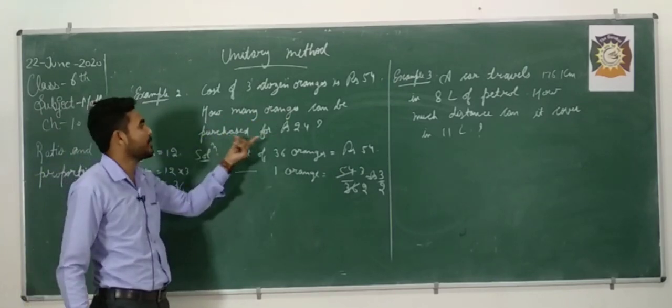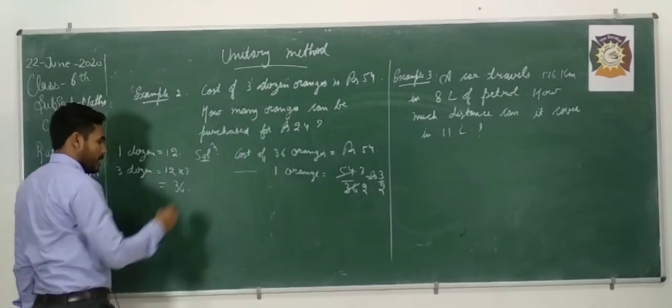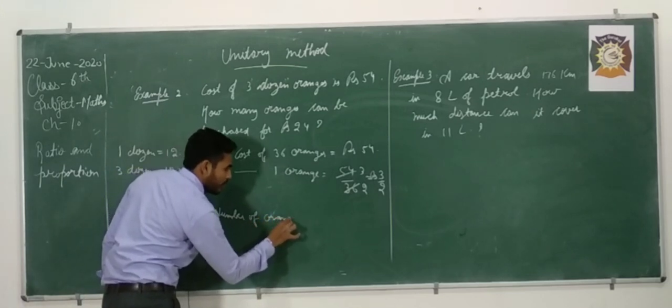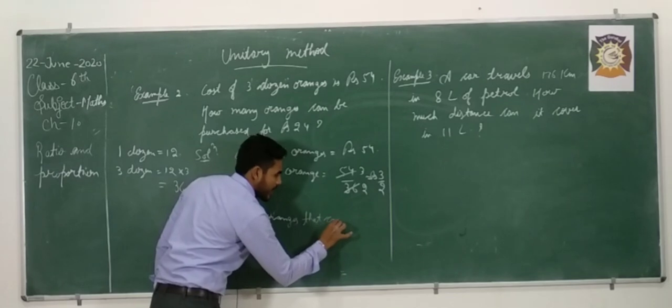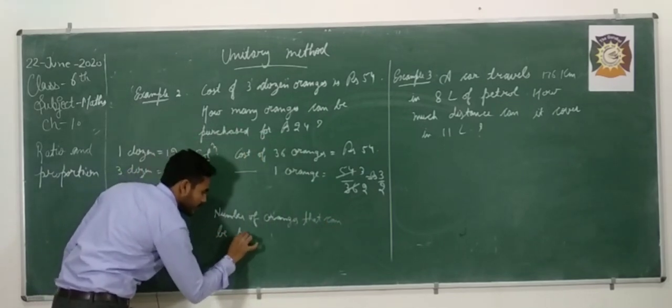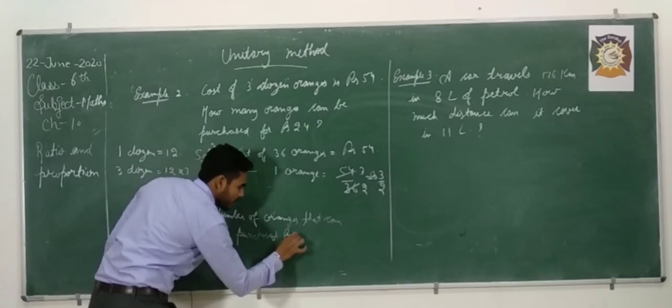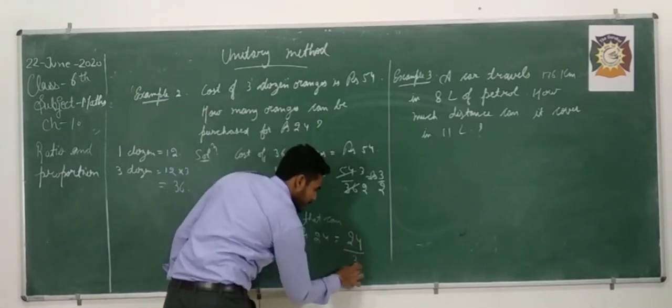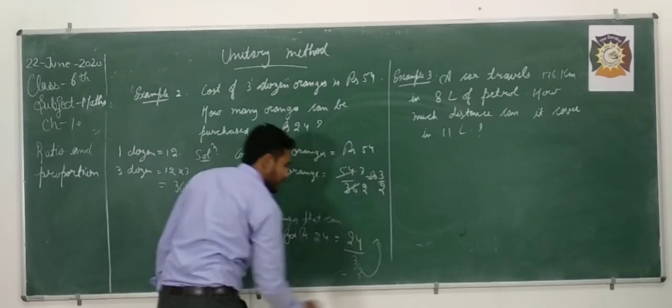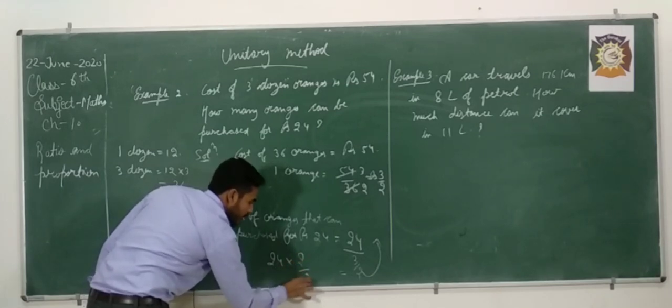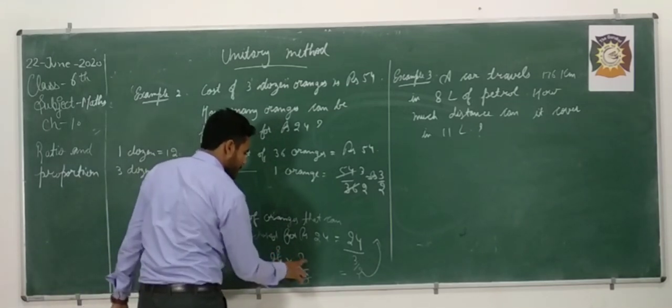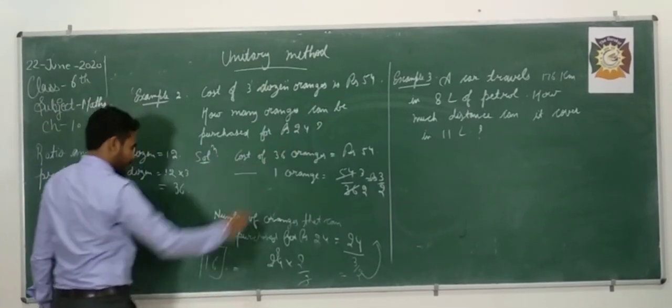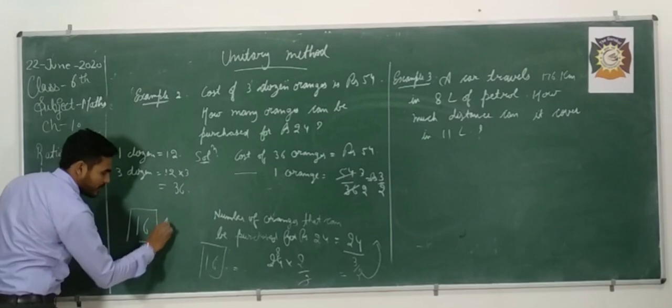It means cost of 1 orange is Rs. 3 by 2. Now, we have to find how many oranges can be purchased for Rs. 24. Number of oranges that can be purchased for Rs. 24, that is equal to 24 divided by 3 by 2. It means that 24 multiplied by 2 by 3. 3 goes into 24, 8 times, multiplied by 2 is 16.